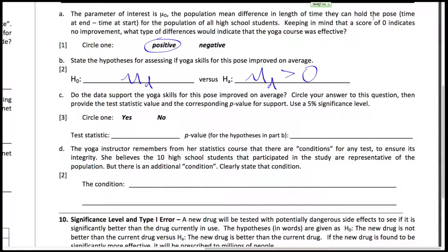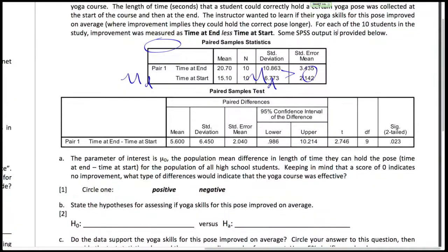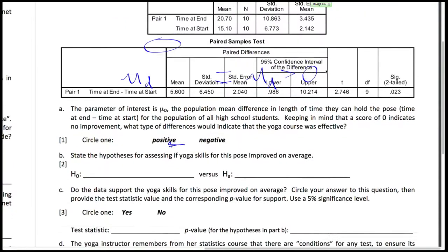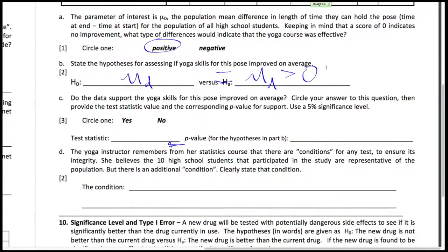The data, the fact that the pose improved on average. So do the data support that? We should look at the data, right? So the data indicates that the mean time at the end was greater than the mean time at the start. So yes, the data do support that hypothesis. So we select yes.